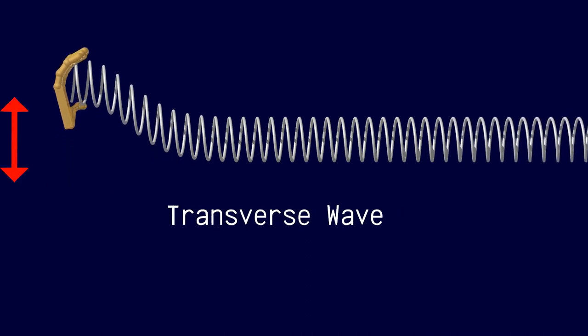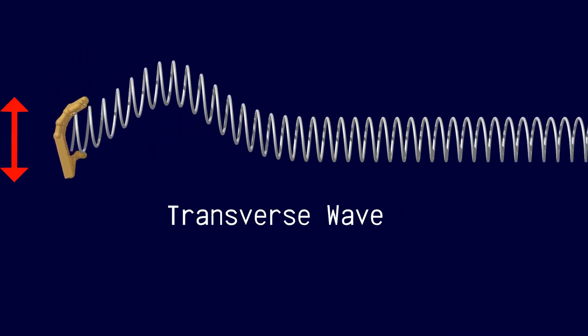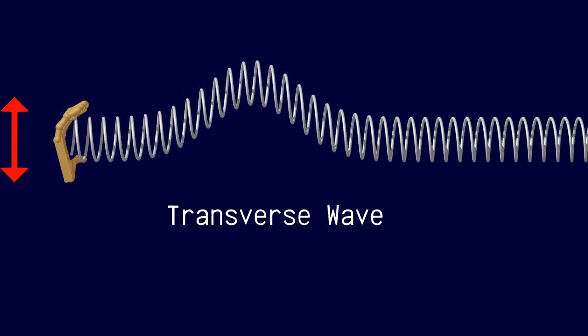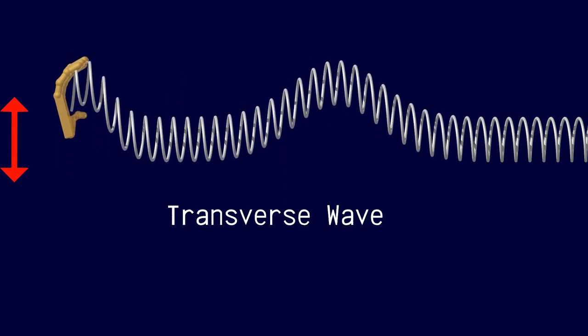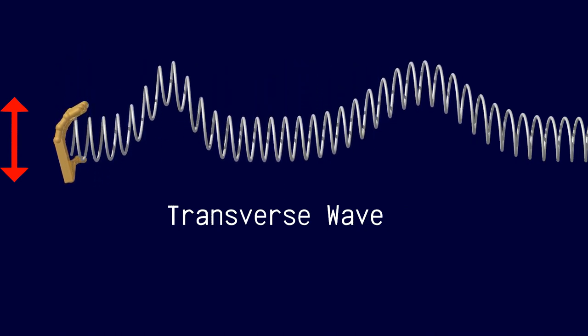In a transverse wave, the disturbance that makes up the wave is perpendicular to the direction in which the wave travels.